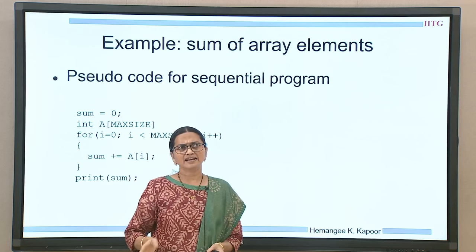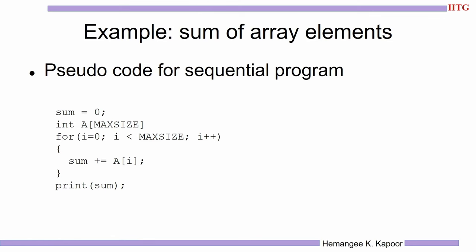We have been using array elements as the running example throughout this introduction module, so I will use the same one to explain things here. The example is the sum of array elements. We have an array A of large size and we need to add the elements into a final sum. In a sequential program, you would have a for loop from 0 to max size, declare a local sum variable initialized to 0, and sequentially add the values. That is the pseudo code for the sequential method of adding array elements.